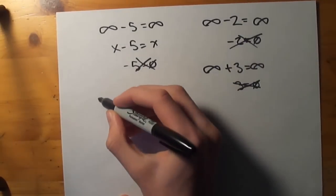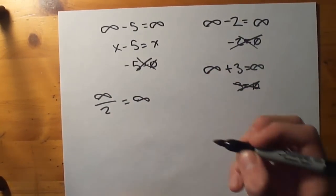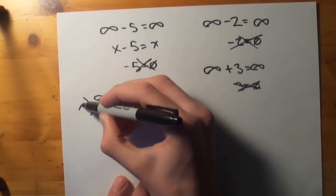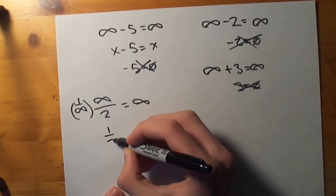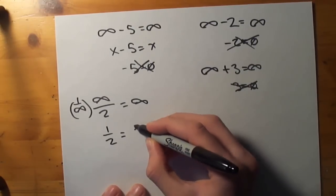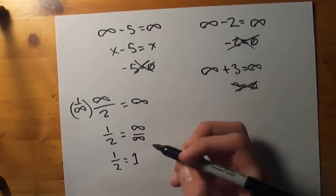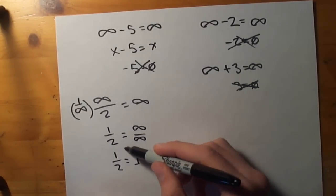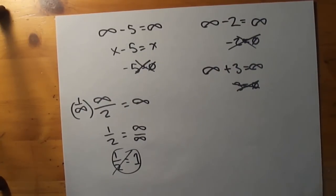What about division? Infinity over 2. Half of infinity. It's equal to infinity. This doesn't work with anything. If this was a variable, multiply it by 1 over infinity, and we get 1 half is equal to infinity over infinity, which is 1. Did I do that right? I did do that right. Okay. And this doesn't work either. Division doesn't work. Multiplication doesn't work.